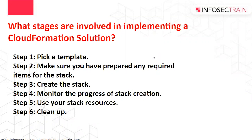What stages are involved in implementing a cloud formation solution? The steps are: Step 1 — pick a template; Step 2 — make sure you have prepared any required items for the stack; Step 3 — create the stack; Step 4 — monitor the progress of stack creation; Step 5 — use your stack resources; Step 6 — cleanup. Build a different cloud formation framework or reuse an existing one in JSON or YAML format. Save the code to an S3 bucket for storage. Use AWS CloudFormation to access the container and build a layer on your framework. CloudFormation examines the file, identifies the resources called, their order and relationships, and then provisions the services one by one.